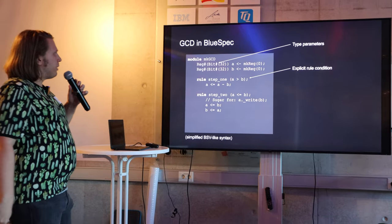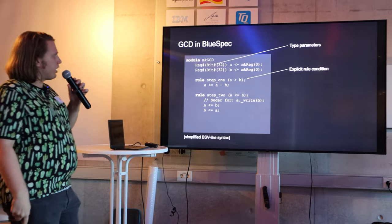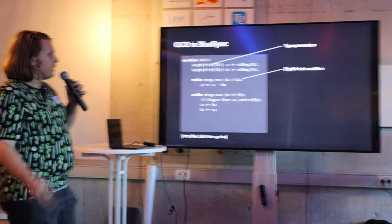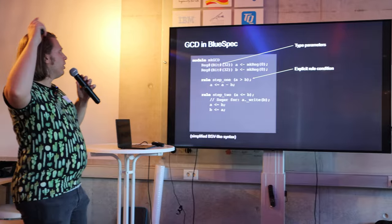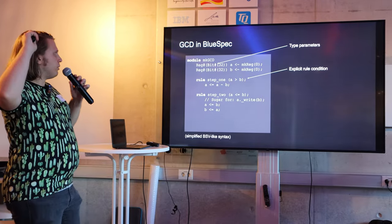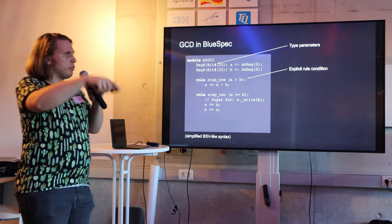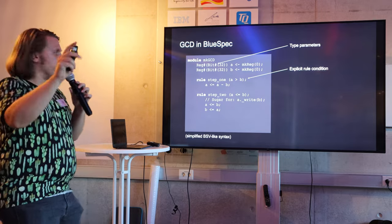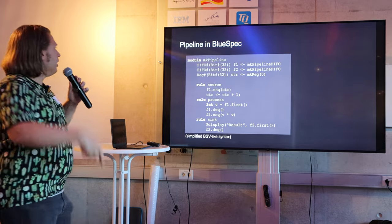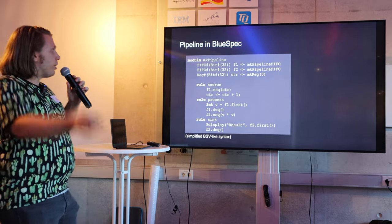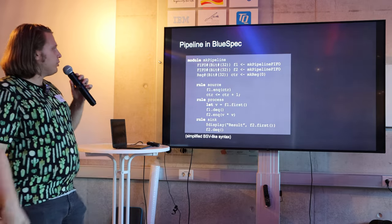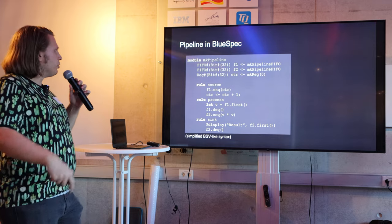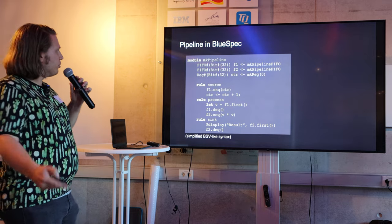The things you might notice is that rules can have explicit conditions, and also your register declarations have this hash sign which means 'here comes a type argument' — more on that later. Here's something more complicated. This is how you would do a simple pipeline in BlueSpec. You'll see it's still just rules.